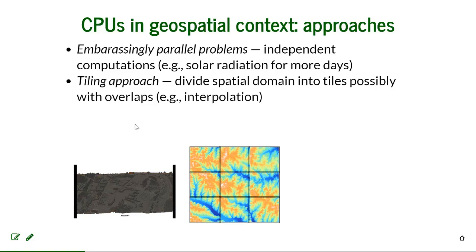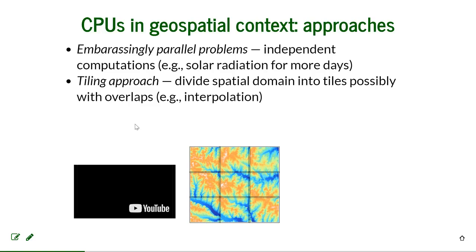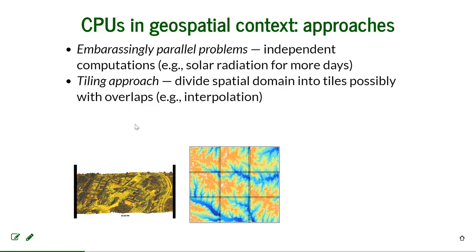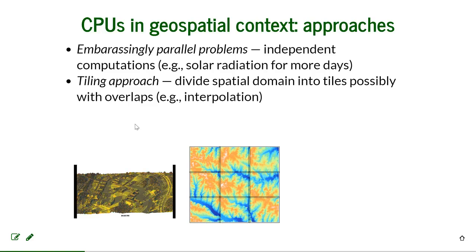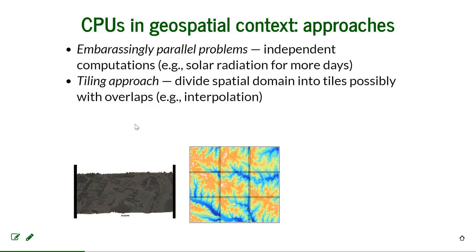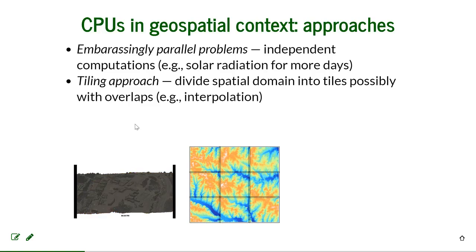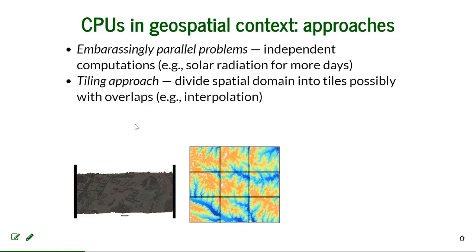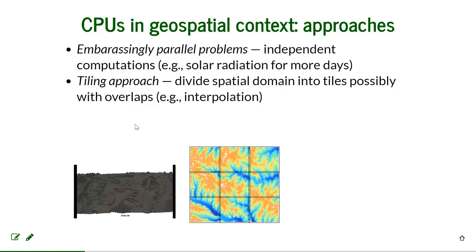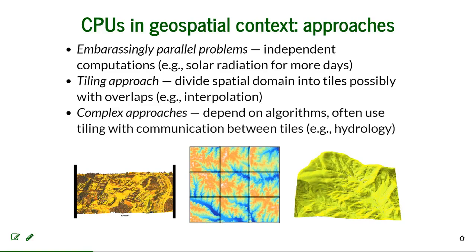For some problems we can use a tiling approach. For example with interpolation, you have points you want to interpolate into a raster, and you can divide the spatial domain into tiles and process each tile separately. With some algorithms you need to consider overlaps so you get a good match where the results are joined together — in interpolation you need overlaps otherwise you'll get discontinuities at the edges.